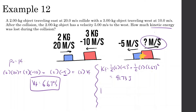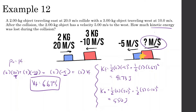Now let's find the initial kinetic energy before the collision: KE_initial = ½ × 2 × (20)² + ½ × 3 × (−10)² = 400 + 150 = 550 joules. Since kinetic energy is lost in inelastic collisions, we do 550 − 91.73, and we see a loss of negative 458.3 joules — meaning 458.3 joules were lost during the collision.